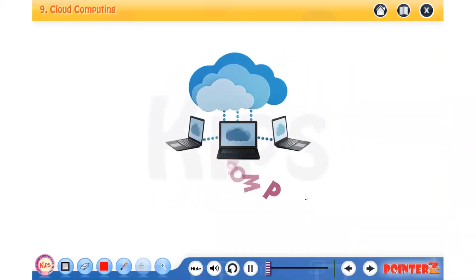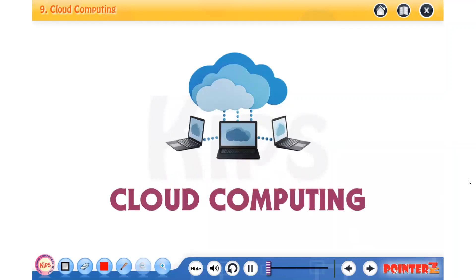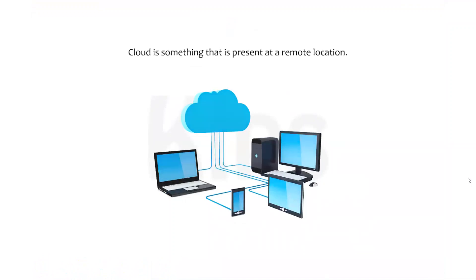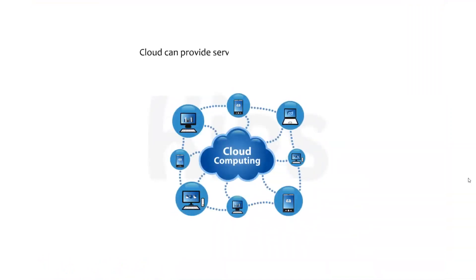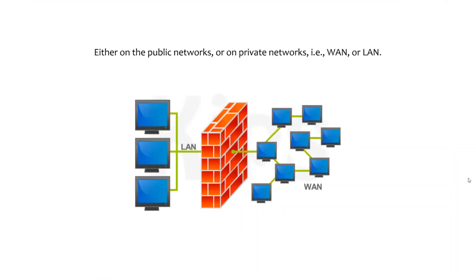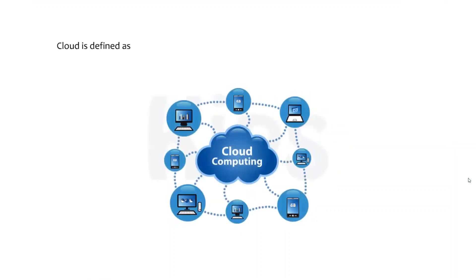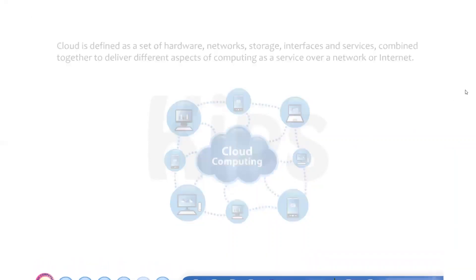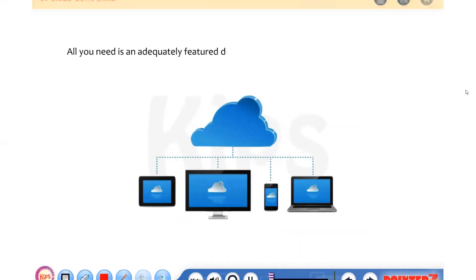Hello students, today we will learn about cloud computing. Cloud is something that is present at a remote location. Cloud can provide services over the network, either on public networks or on private networks such as WAN or LAN. Cloud is defined as a set of hardware, network, storage, interfaces, and services combined together to deliver different aspects of computing as a service over a network or internet.